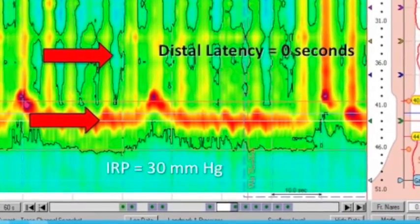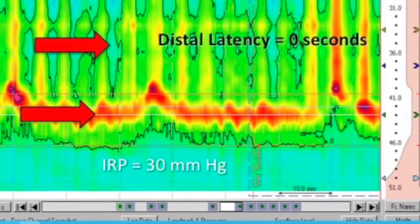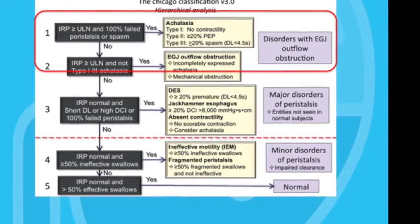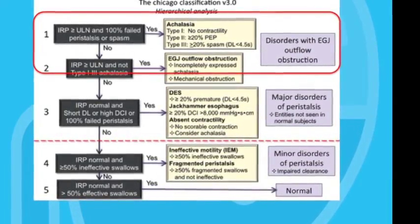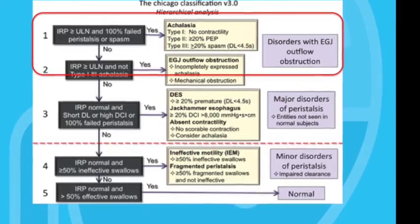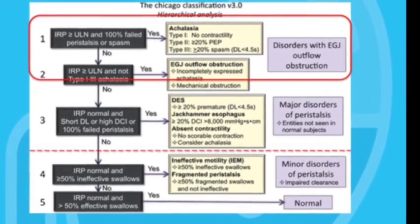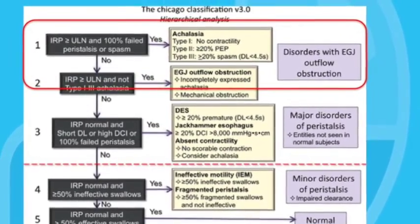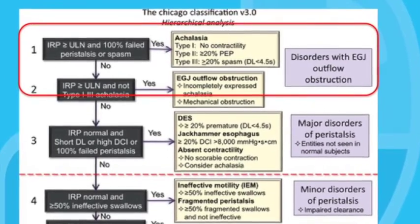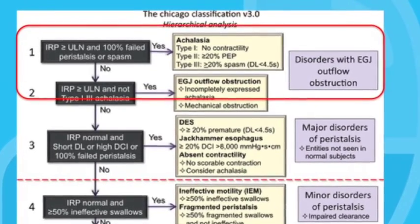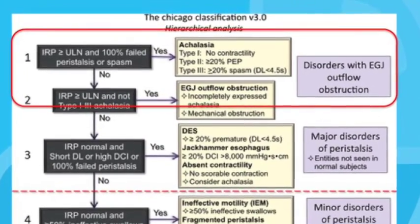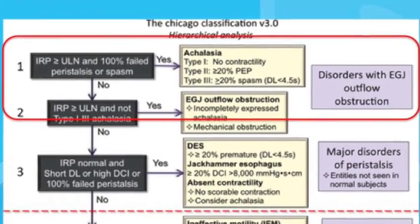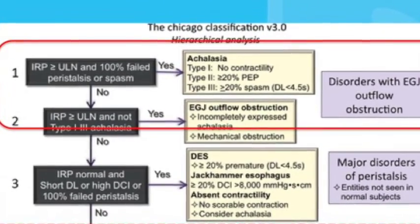This tracing looks like type 2 achalasia. According to the Chicago classification, there are actually three types of achalasia — 1, 2, and 3 — each with different manometric characteristics as well as different responses to therapy. We have covered these in a previous podcast session on the diagnosis and management of achalasia, and our listeners may want to review those again.